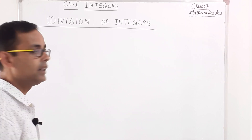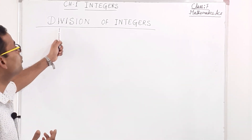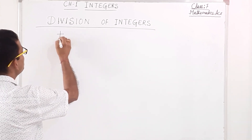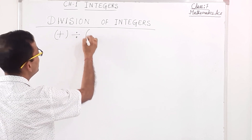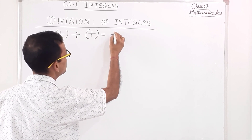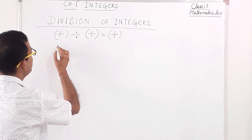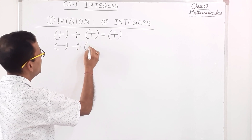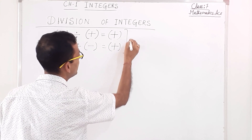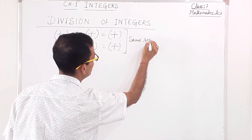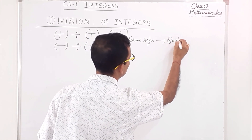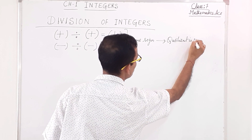Next, we will know the rule of division of integers. If a positive integer is divided by another positive integer, the quotient will be positive. And if a negative integer is divided by a negative integer, the quotient will also be positive. That means same sign — quotient is positive.